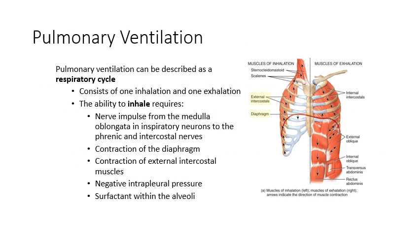So a single respiratory cycle is going to consist of one inhalation and one exhalation. In order to inhale, we need a lot of things to be operating properly. First, we need a signal from the brain, and that's going to originate in the medulla oblongata. That signal is going to go down to your diaphragm via the phrenic nerves, and the intercostal nerves which lead to the muscles between your ribs. It's going to tell those muscles — both the diaphragm and the external intercostals — to contract.